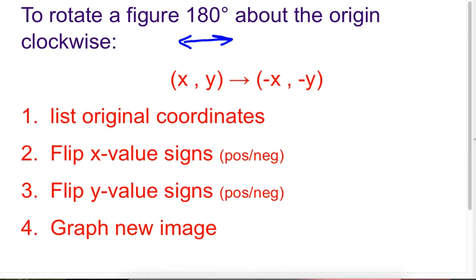So here are the directions for how to do that. List your original coordinates. So now let's say we're looking at point B and I'm going to say point B is negative one, four. I don't know, I'm just making things up. I'm going to flip the x value sign from positive to negative. Okay, so the x is negative one. I'm going to flip it to its opposite. So now it's a positive one. Step three says flip the y value signs again from positive to negative or negative to positive. So my y is currently a four. It's going to become a negative four.